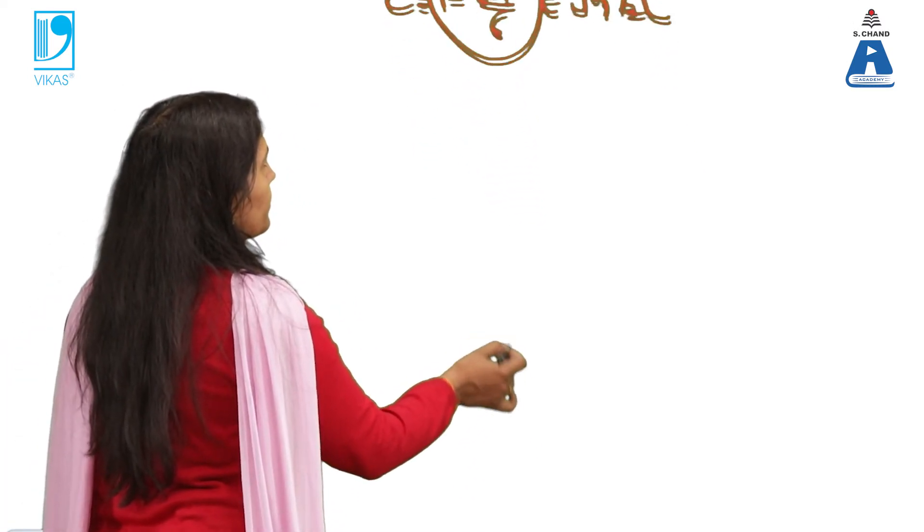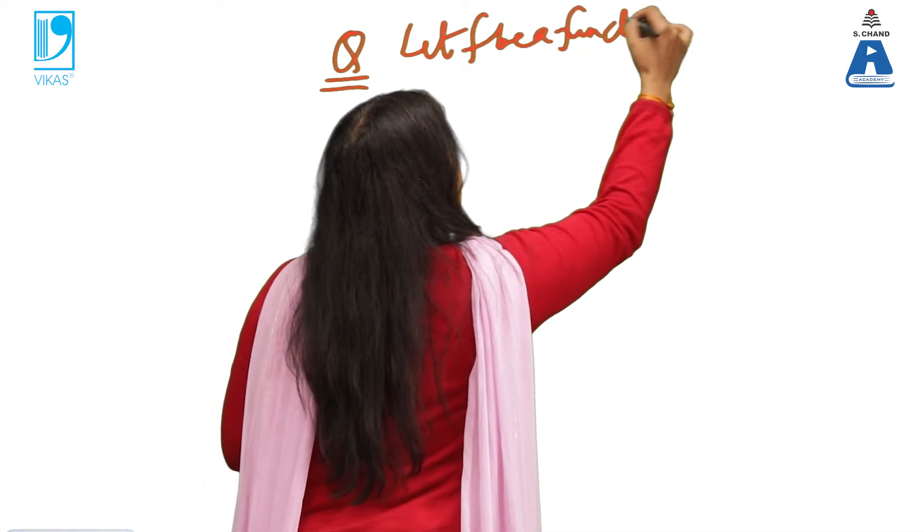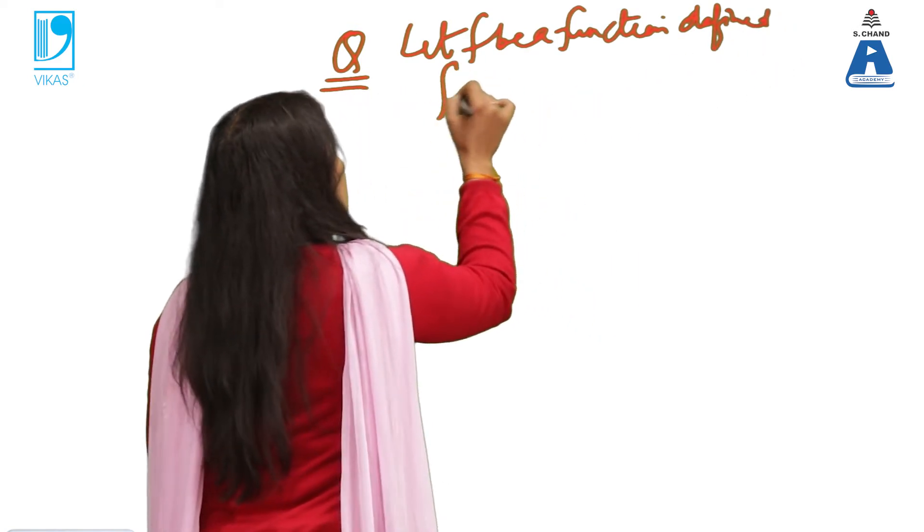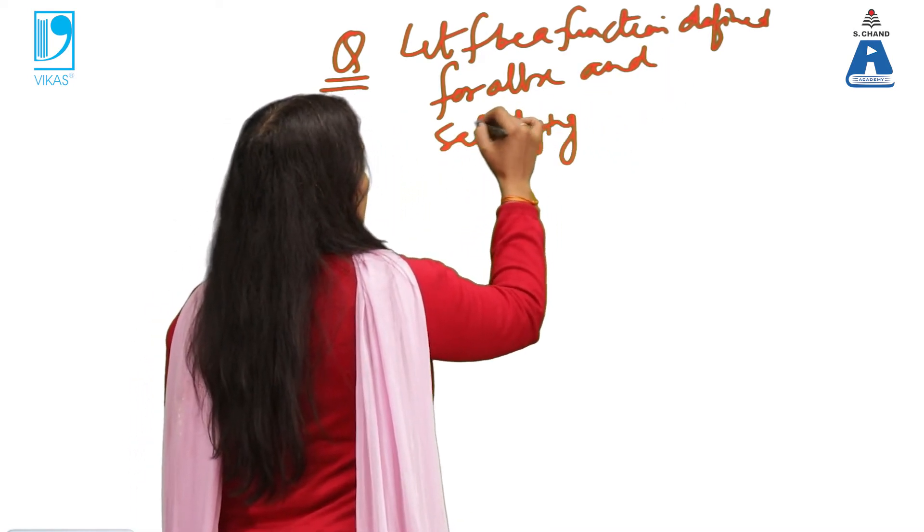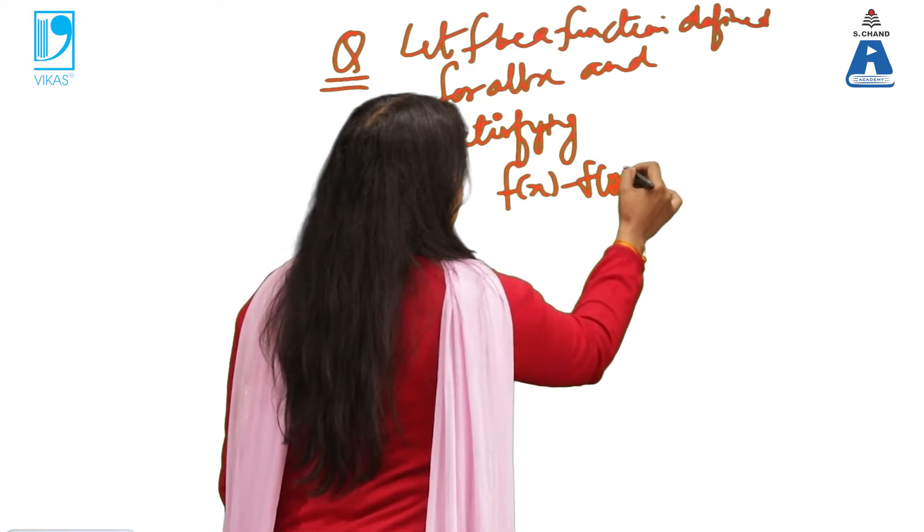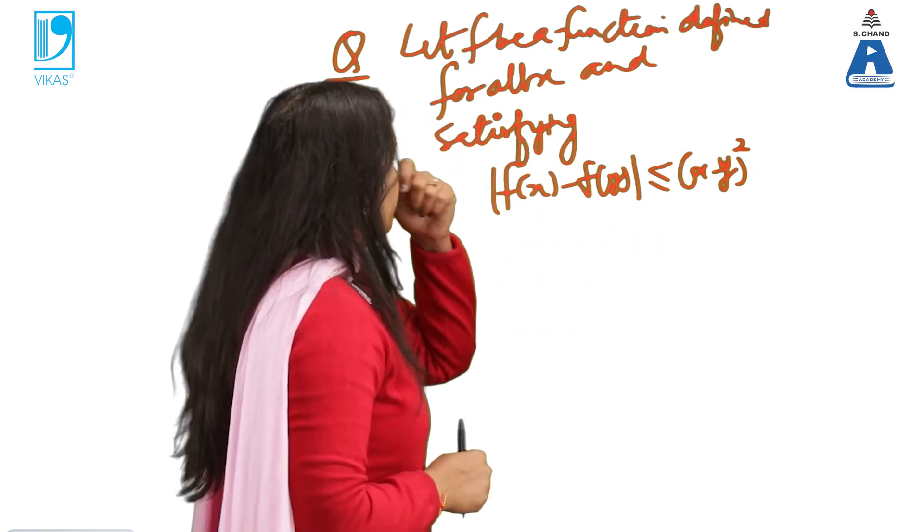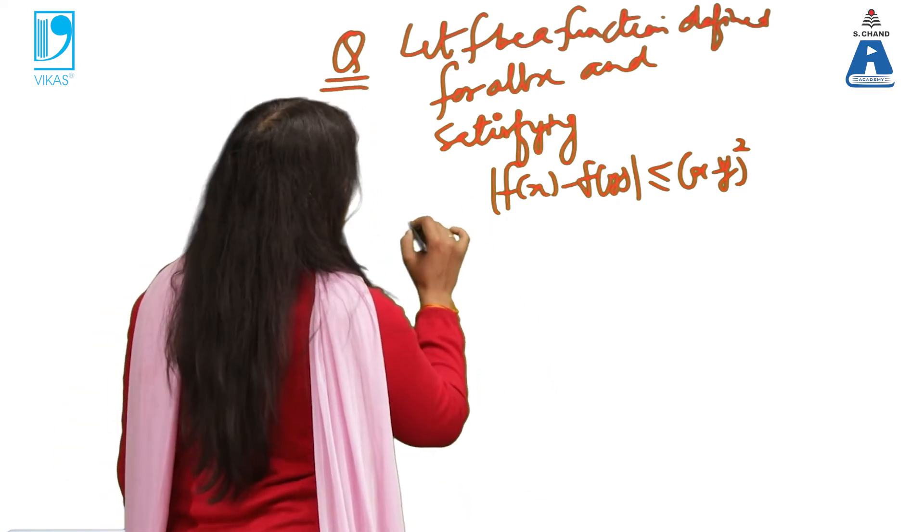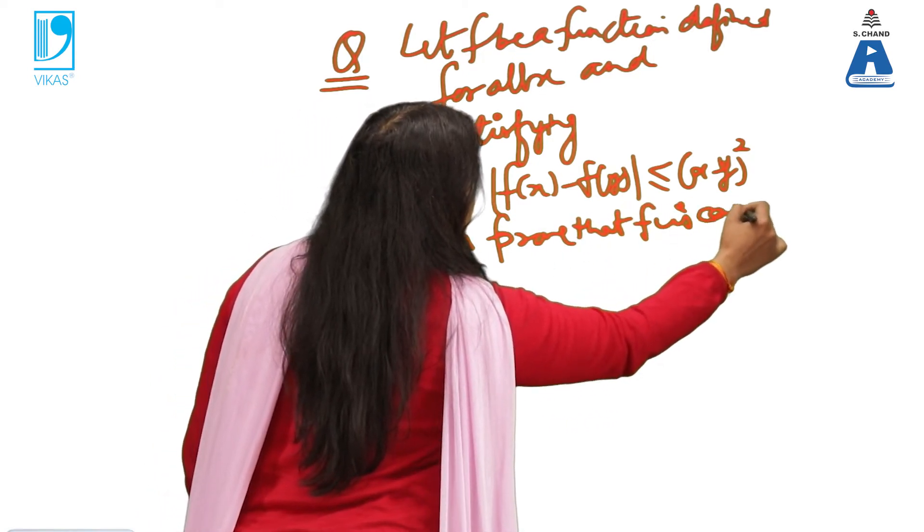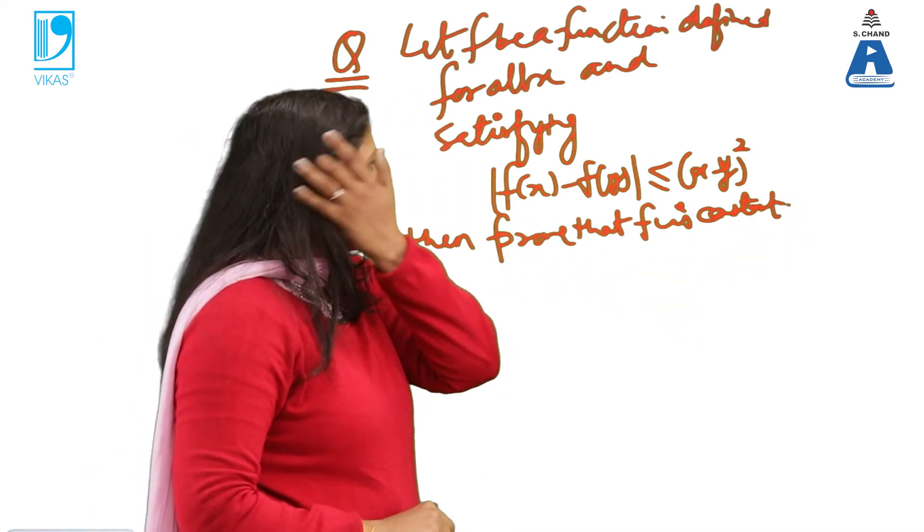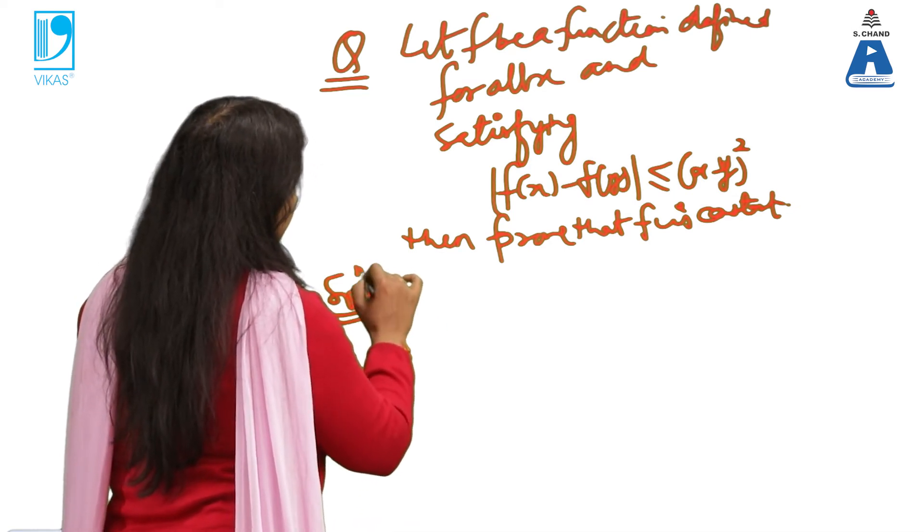Now, another problem. So the problem is: if let f be a function defined for all x and satisfying |f(x) - f(y)| ≤ (x - y)², this is the condition given. We have to prove. Then prove that f is constant. If we are supposed to prove that f is constant, what to show? That the derivative is 0 and how you will show the derivative is 0 that you can see. Obviously, given condition we will be using.